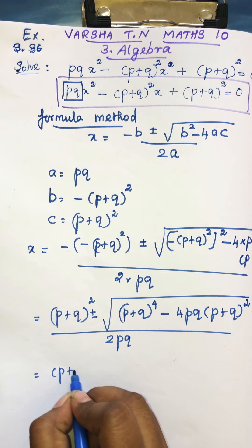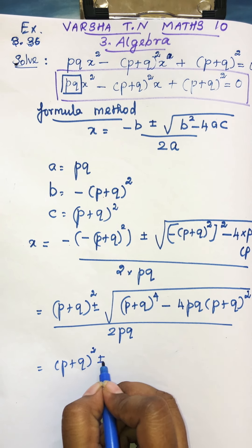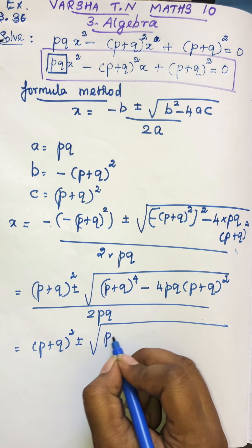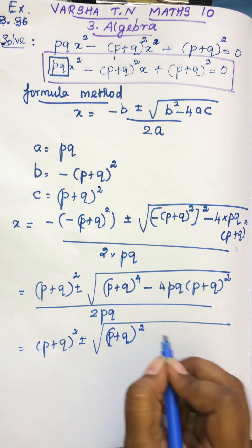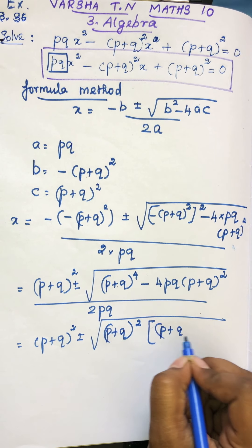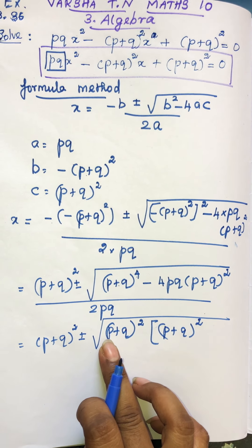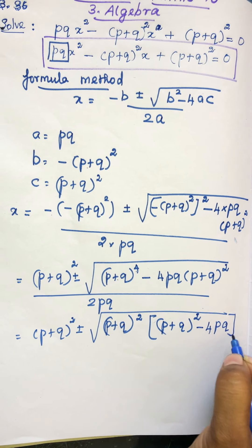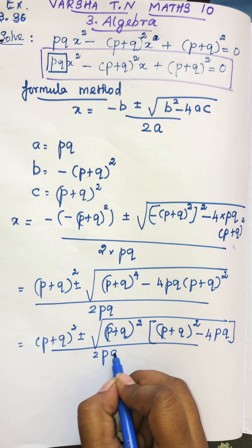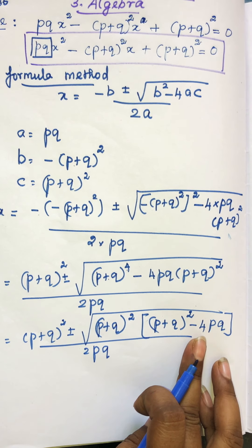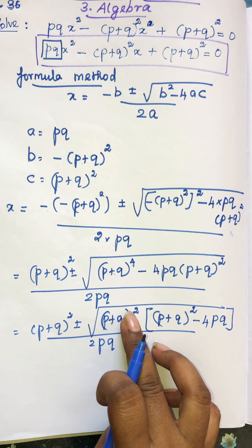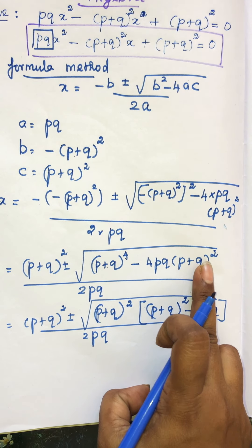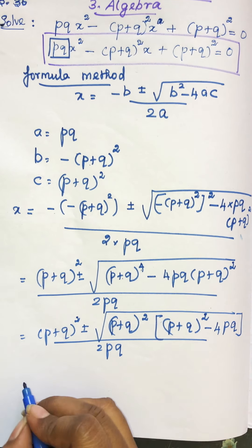In the next step, we have (p plus q)² plus or minus root of... Now see students: (p plus q) is to the power 4, so we can take (p plus q)² as a common factor. After taking it common, one square remains. So inside the root we get (p plus q)² minus 4pq, divided by 2pq.